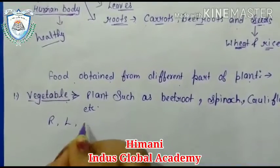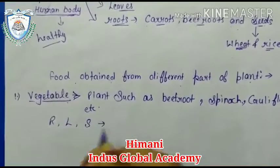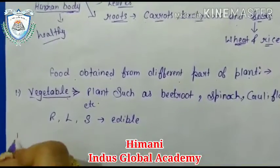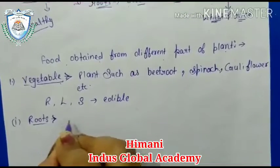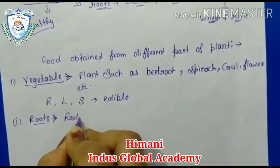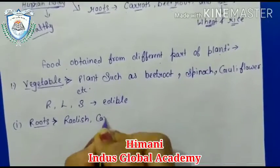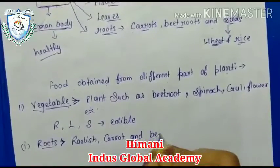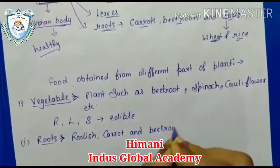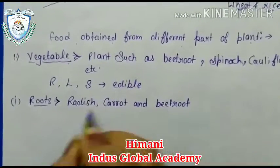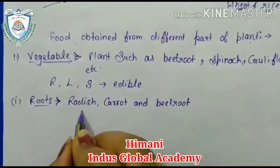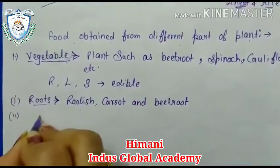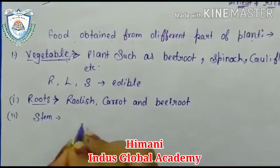Roots, leaves, and stems of some plants are also edible. First, roots — like radish, carrot, and beetroot. These are some of the roots that are eaten as vegetables.